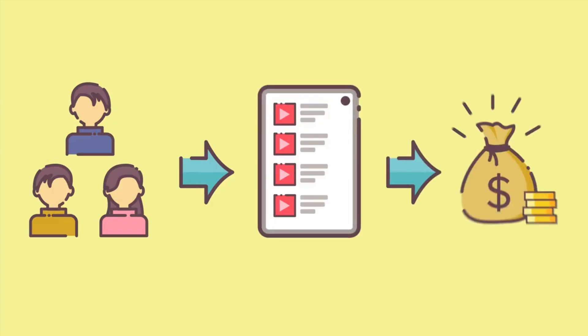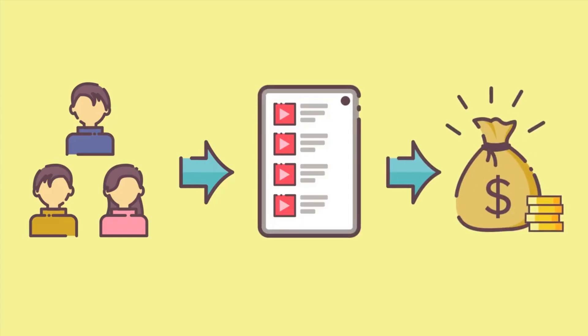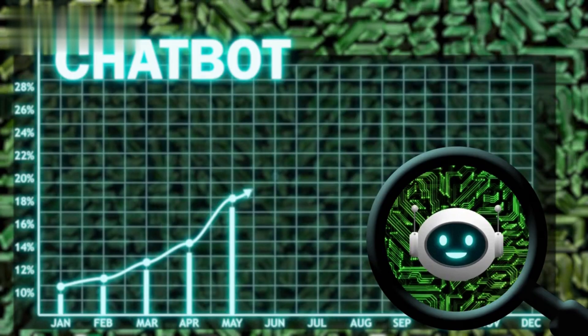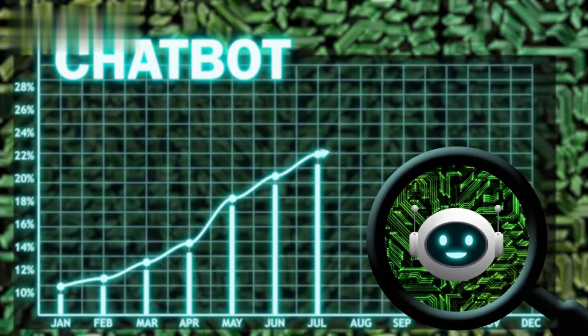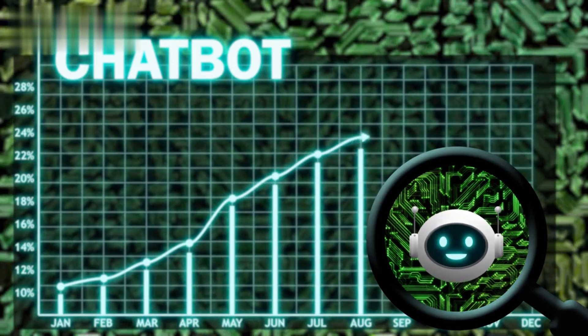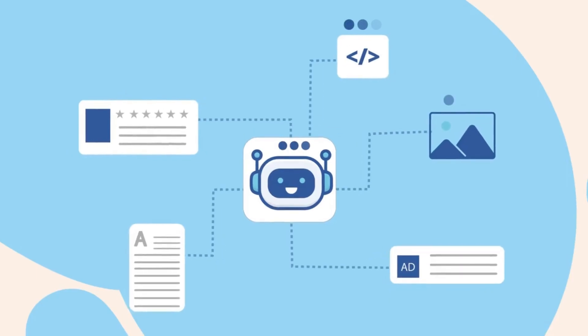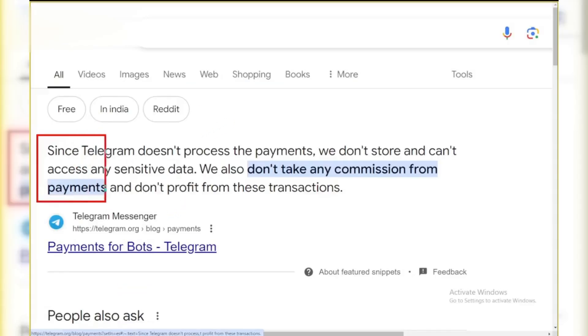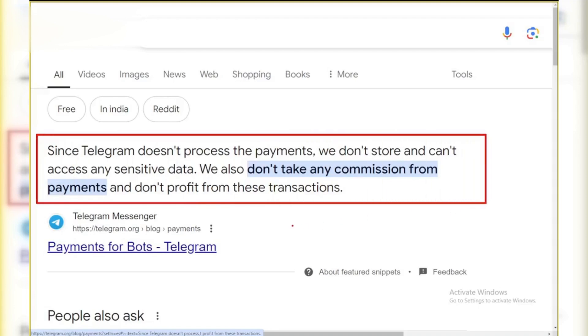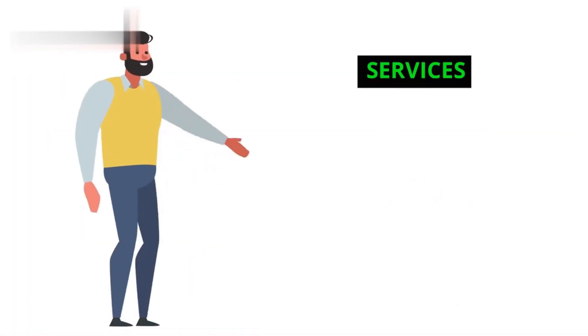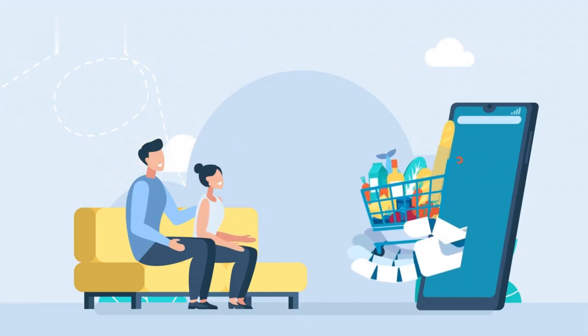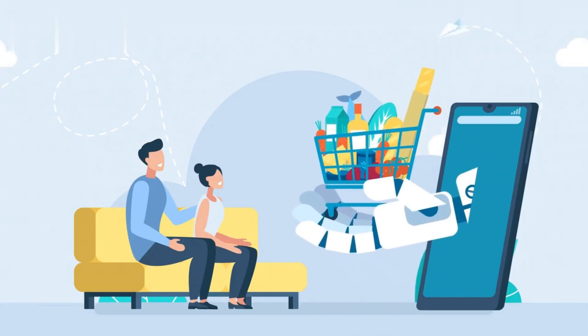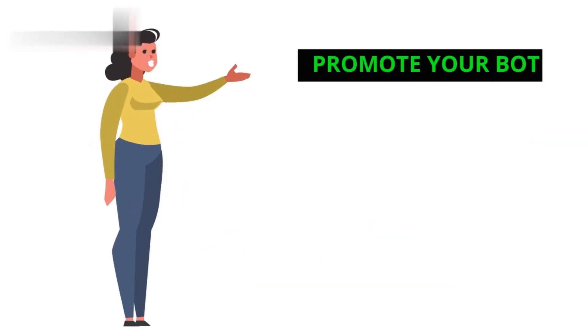Step 3: Monetize your bot. Now let's talk money. There are several ways to monetize your Telegram bot. Subscriptions: charge users a monthly fee for premium content or features. Ads: display ads or sponsored content through your bot. Affiliate marketing: promote products and earn commissions on sales made through your bot's links. Services: offer specific services like consultations or digital products for a fee.